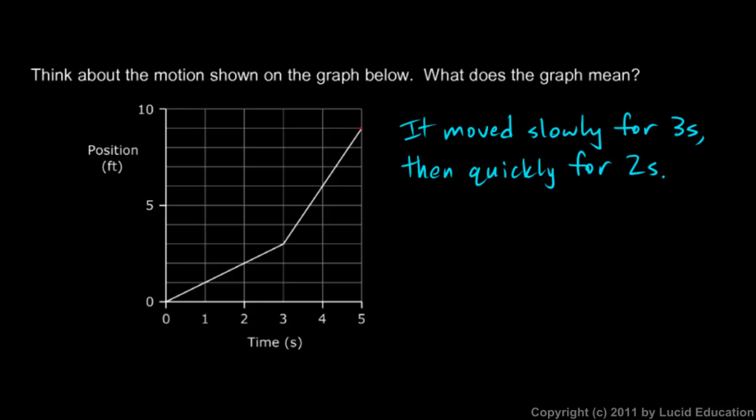And then this point on the graph means that at five seconds, it was at position nine feet. So during this next two seconds, it went from this position to that position, which would be six feet.